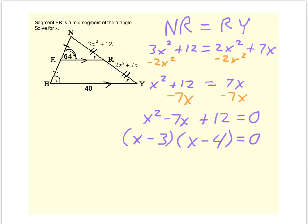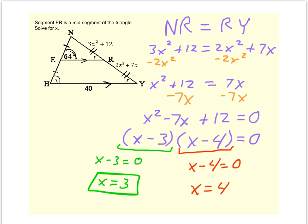So now either the first term is equal to 0 or the second term is equal to 0. So if x minus 3 is equal to 0, that means x could possibly be positive 3. If x minus 4 equals 0, that means x could be equal positive 4.